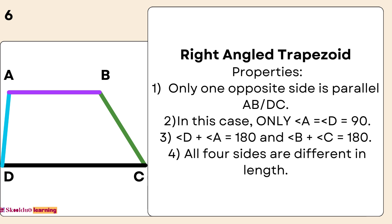Right Angled Trapezoid Properties. One: Only one pair of opposite sides is parallel (AB parallel to DC). Two: Only A and D equal 90 degrees. Three: D plus A equals 180, and B plus C equals 180. Four: All four sides are different in length.